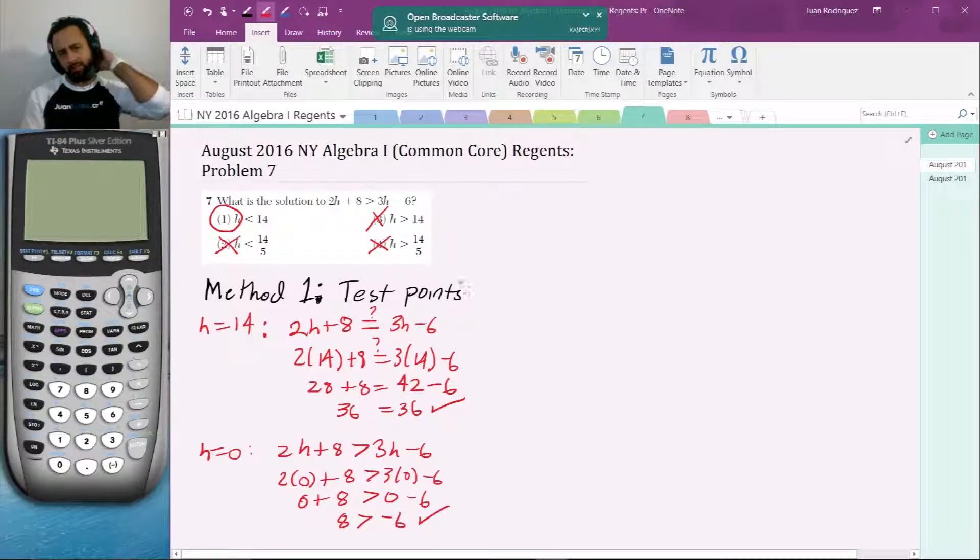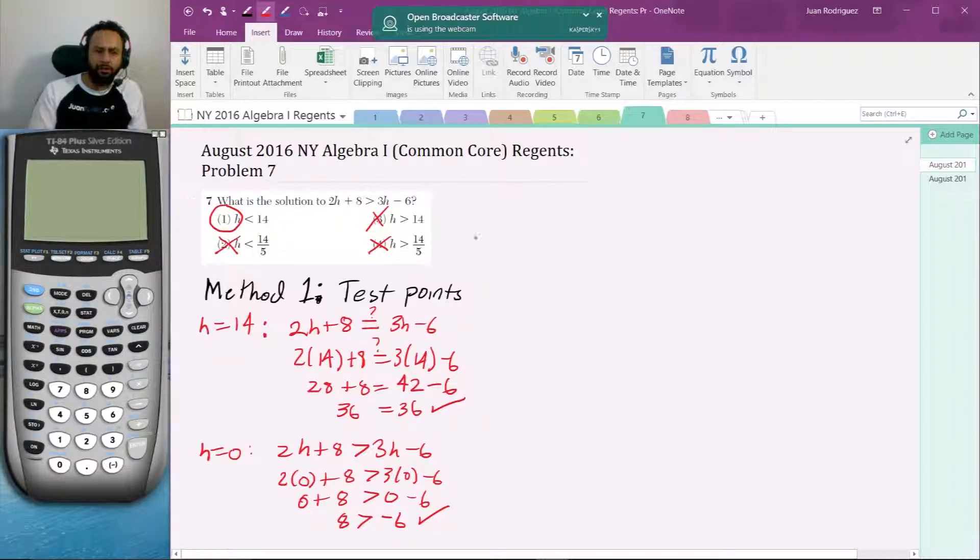Which proves that this is the correct solution and this is not the answer. And we could take a test point, any other test point, in fact we could take another one H greater than 14 to finally check our answer, but we're going to go to another method which is also a totally valid method of checking your answer.